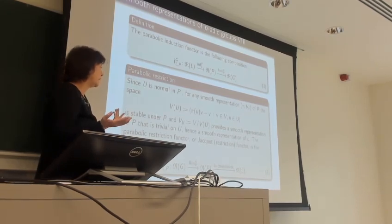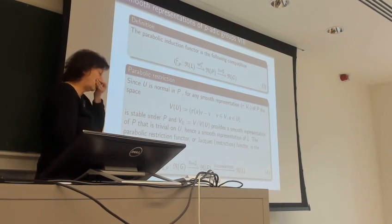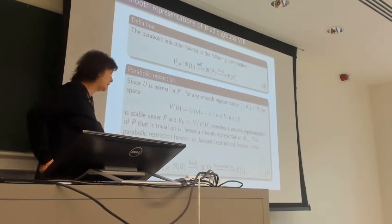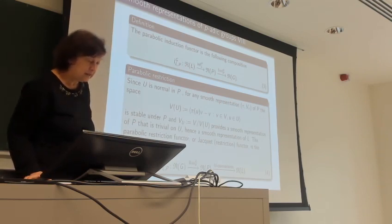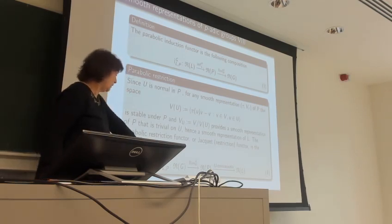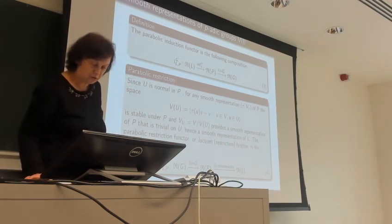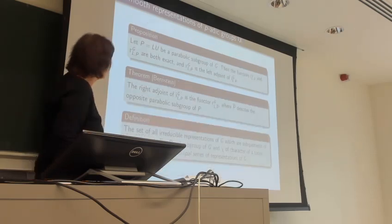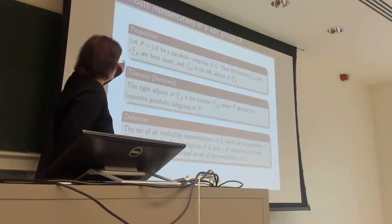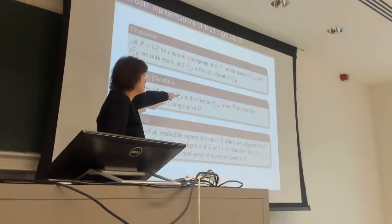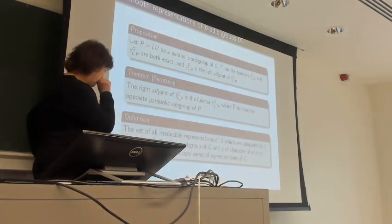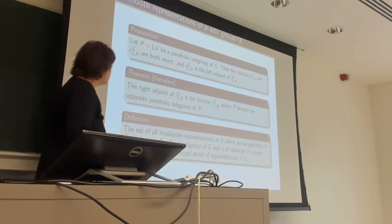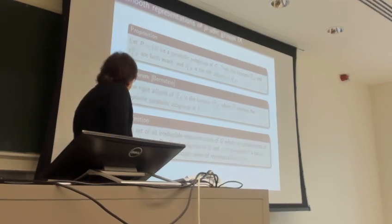The right adjoint of parabolic induction also exists — this was proved by Bernstein — and it is the Jacquet restriction but with respect to the opposite parabolic subgroup. So we have two inductions and their adjoints on both sides.